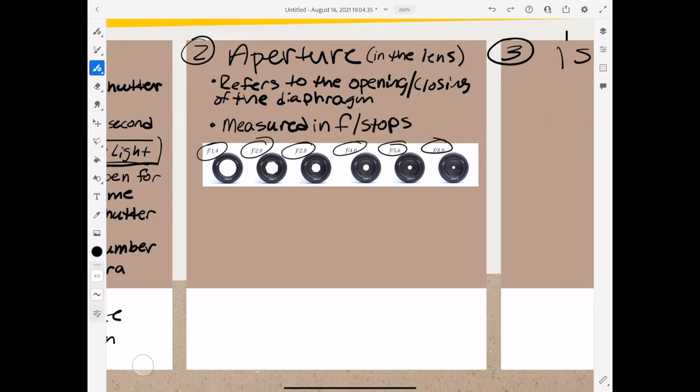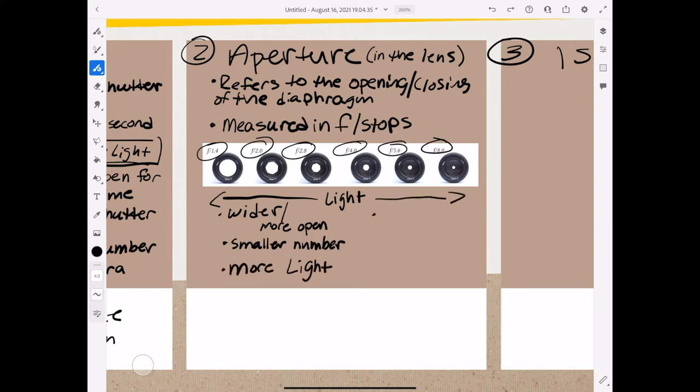When changed, aperture also controls light. The wider or more open the aperture, the smaller the number, the more light comes in. That means the more narrow or more closed the aperture is, the larger the number and less light comes in.